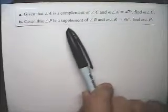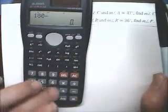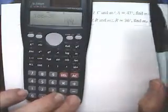R is 36, find P. Now, supplementary means 180. So for this, we'll have to do 180 take away 36. And that's 144.